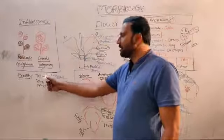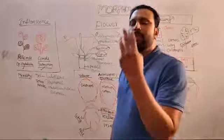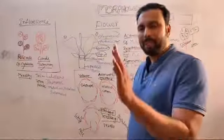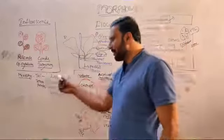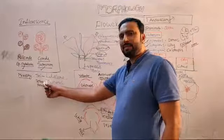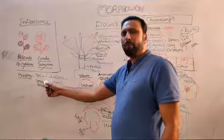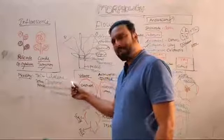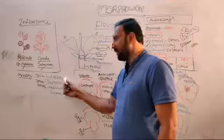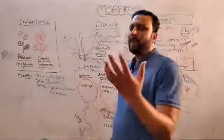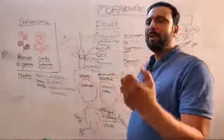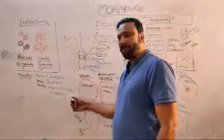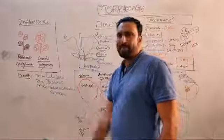Trimerous means three sepals, three petals, or multiples of three are present — example Liliaceae. Tetramerous means four floral parts or multiples of four are present — example Raphanus. Pentamerous means five perianth lobes or multiples of five are present — example Malvaceae, Fabaceae, Solanaceae.